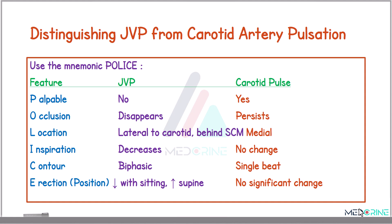To distinguish between jugular venous pressure and carotid pulsation, we use the mnemonic POLICE. POLICE stands for: Palpable, Occlusion, Location, Inspiration, Contour, and Erection.